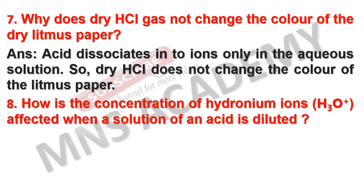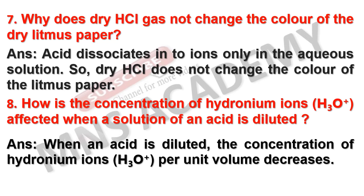How is the concentration of hydronium ions affected when a solution of an acid is diluted? When an acid is diluted, the concentration of hydronium ions (H₃O⁺) per unit volume decreases.